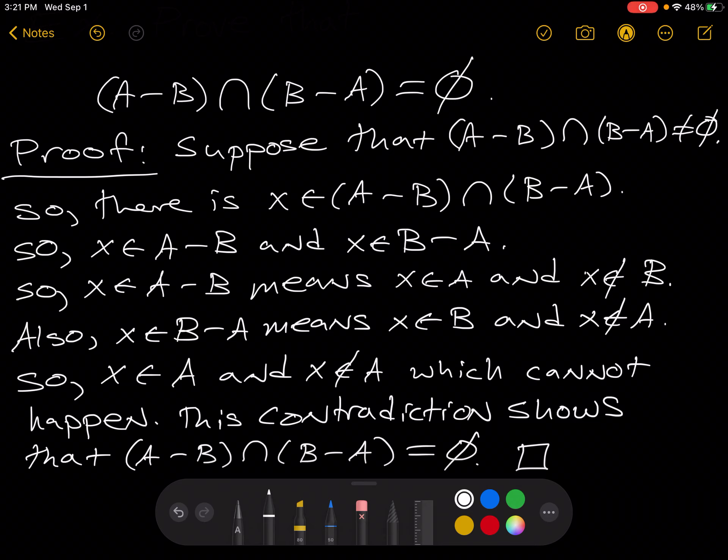So notice that this is a classic proof by contradiction. We want to show that two sets, when they have nothing in common, when you intersect them, they have nothing in common. So we say, what happens if they do have something in common? If they do have something in common, we get a contradiction. That contradiction is that x is in A and not in A.